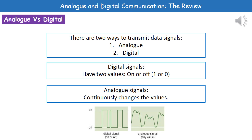Welcome to our review on analog and digital communication. First, we need to understand that there are two ways to transmit data signals, either using analog or using digital. When we compare these two signals, when we talk about a digital signal, we're referring to something that has only two values — it's either on or off.